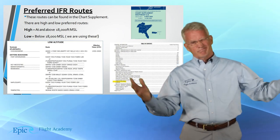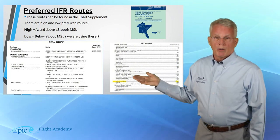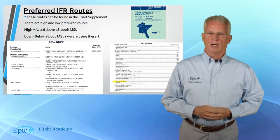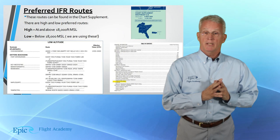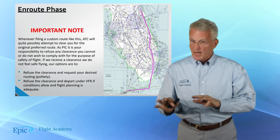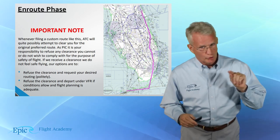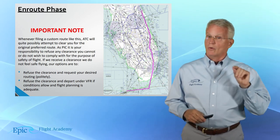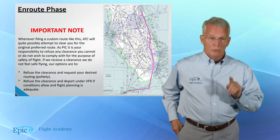So what do we do? We would depart from New Smyrna Beach or Ormond Beach and then join that preferred route structure from Daytona Beach. It is important to remember that if you file for other than a preferred route, be ready and don't be surprised if you receive an actual clearance for the preferred route. Review this with your CFII.